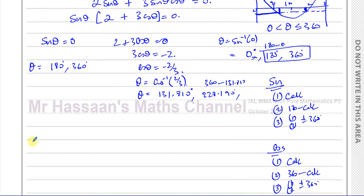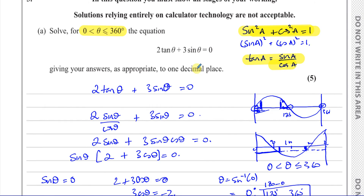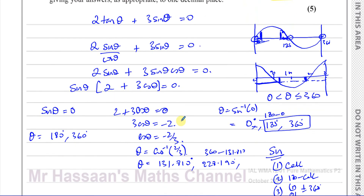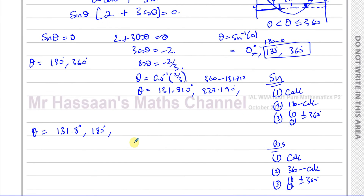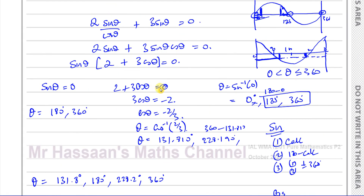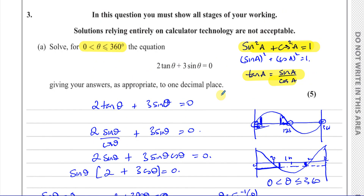So our answers in order are: theta equals 131.8°, 180°, 228.2°, and 360°. If an answer is a whole number like 180 we don't need to give it to one decimal place. We do not include 0° because it is not in our range. These are the four solutions to part A.